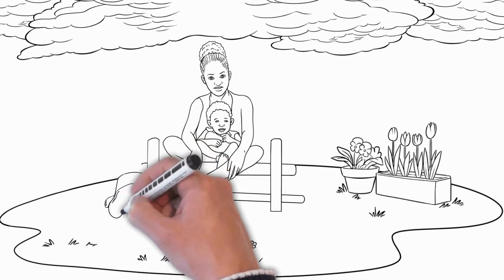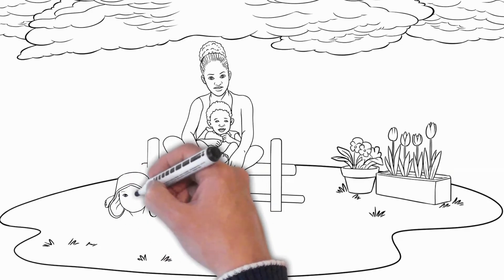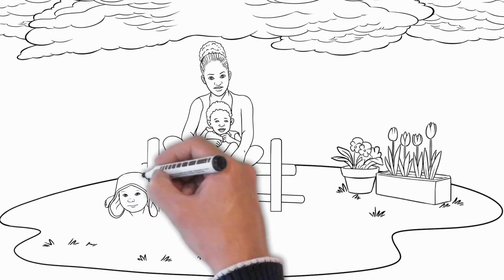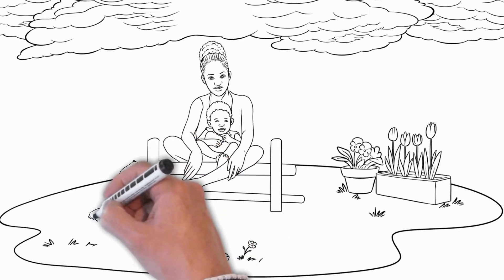The scientists then tied a string from each child's foot to the end of the device. The babies, in turn, quickly understood what was required of them. They liked to see how the mechanism worked, and therefore they kicked it more often than before the rope was attached to their leg, demonstrating that they realized that kicking makes the machine move.